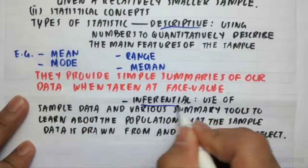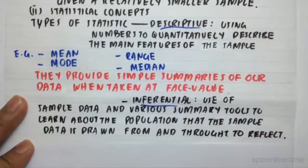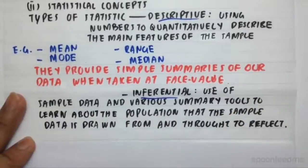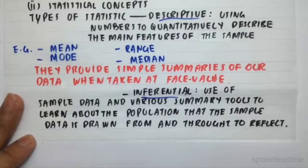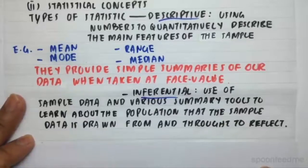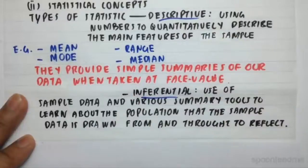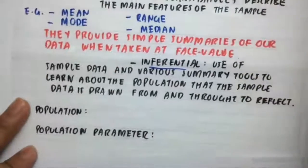And then we also have inferential statistics. So after we have some of these descriptive statistics, inferential statistics allows us to use some of the sample data and various summary tools to learn about the population that the sample data is drawn from and thought to reflect. So if we imagine a group of people is our population, so everyone, and what statistics try to do, we draw a sample from that population, learn about that sample, and try to infer certain things about the population from that sample and statistics.